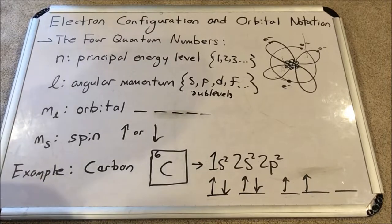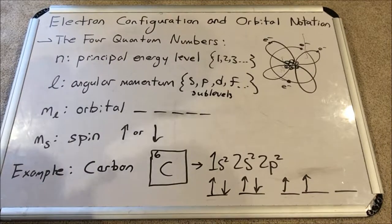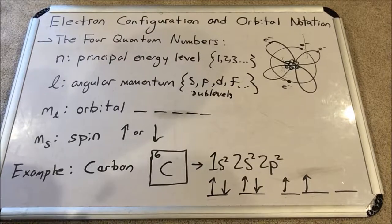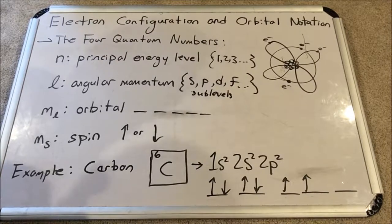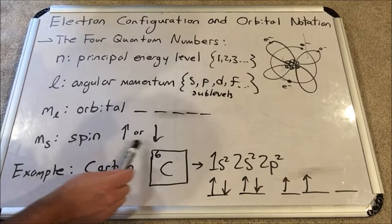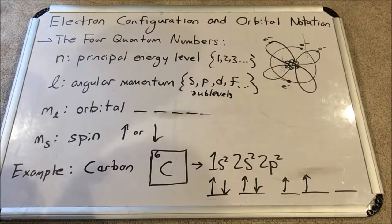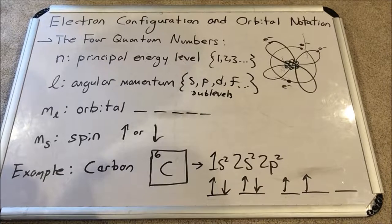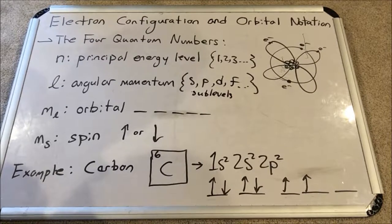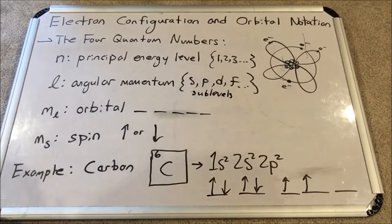Then we have MS, which stands for the spin quantum number. I'm not going to try to discuss what spin is. It's related to magnetism. However, it can either be spin up or spin down. Those are the only options for spin.